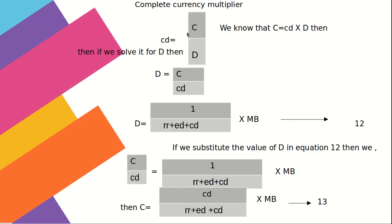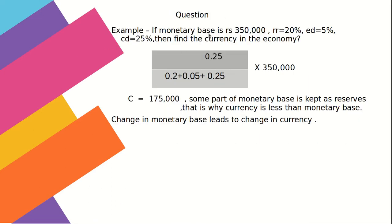Complete currency multiplier: since C = Cd × D, we can solve for D = C / Cd. Substituting the deposit formula, currency = [CD / (RR + ED + CD)] × MB. For example, with MB = 3,50,000, RR = 20%, ED = 5%, CD = 25%, currency = 75,000. Some part of monetary base is kept as reserves, which is why currency is less than monetary base. A change in monetary base leads to a change in currency.